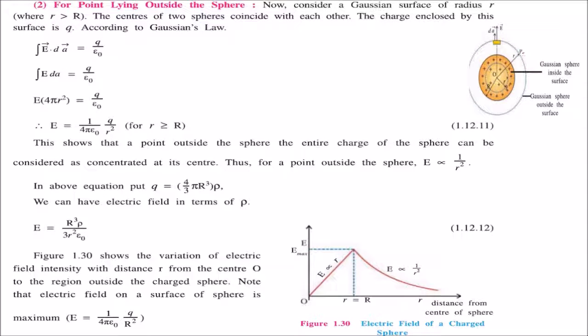Now to find the electric field at a point outside the uniformly charged sphere, we take a Gaussian surface at radius r where r > R. According to Gauss's law, ∫E·dA = q/ε₀.